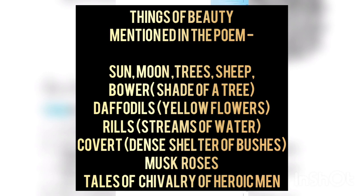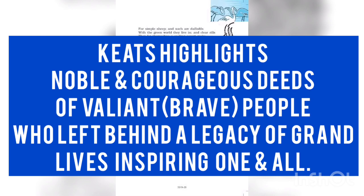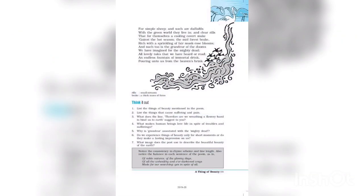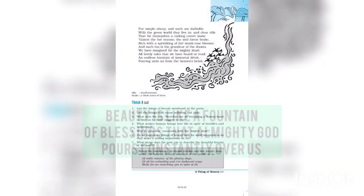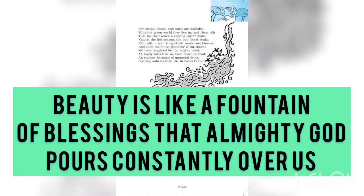The poet talks about beautiful things like the sun, moon, trees, sheep, and daffodils — yellow coloured flowers — as well as rills, meaning streams, greenery, and flowers. He also talks about people who were very brave and whose life histories are very inspiring for all readers. Stories of chivalry and bravery are also inspiring. The poet's view is that beauty is an endless fountain from heaven that constantly brings many blessings upon us.